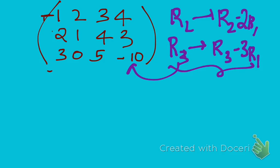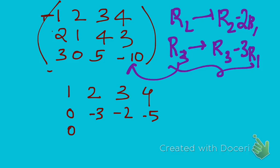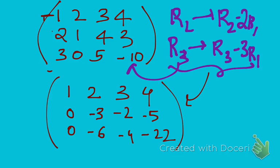On performing these operations I get: 1, 2, 3, 4 / 0, minus 3, minus 2, minus 5 / 0, minus 6, minus 4, minus 22. So on performing these operations I've got this specific change in the matrix.